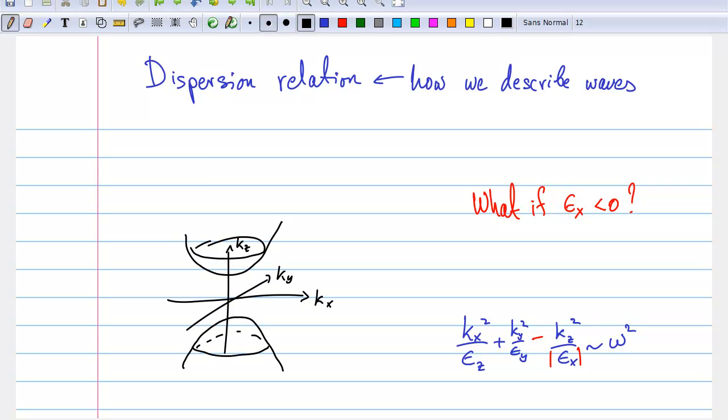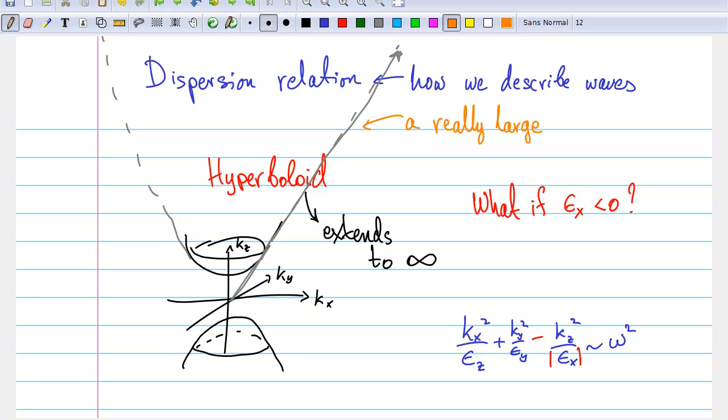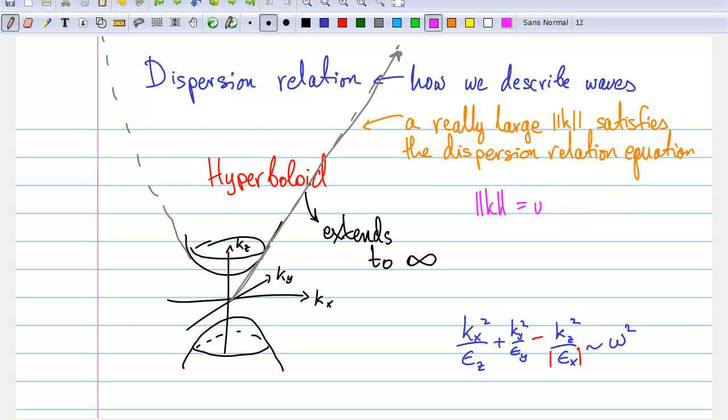Now, a hyperbola is very different from an ellipse in that it extends out to infinity. And remember that every point on this hyperboloid represents an allowed wave vector. This means that hyperbolic metamaterials can admit wave vectors that are very large, and the wavelength of light inside the material, which goes as 1 over the wave vector, is correspondingly very small, in principle infinitesimally small.